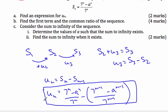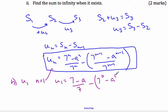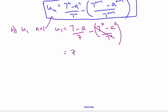That can be as messy as that. Moving to Part B, I need to find the first term and the common ratio. For the first term, I want U_1, so n equals 1. Plugging in: U_1 equals (7 minus A)/7 minus (7^0 minus A^0)/7^0. That's 1 minus 1 equals 0, so that term vanishes, giving U_1 equals 1 minus A/7.